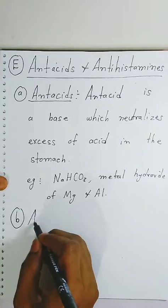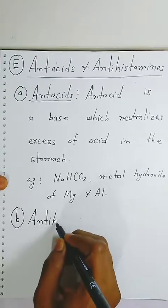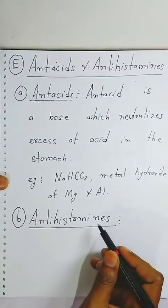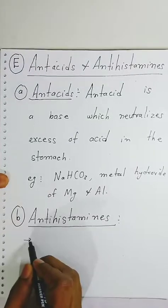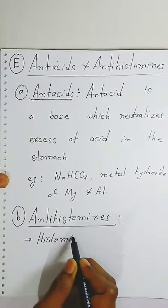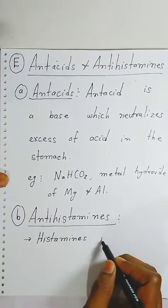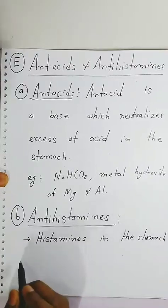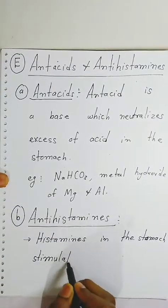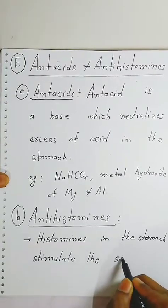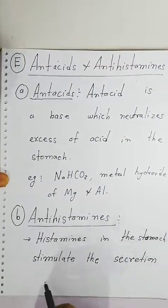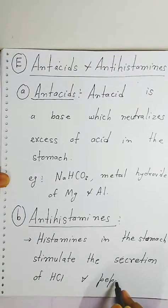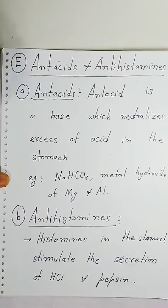Now we will see anti-histamines. Against histamines, the drugs we use are called anti-histamines. First, you should know what histamines are. Histamines in the stomach stimulate the secretion of HCl. Because of histamines, a lot of HCl will be generated in our stomach, as well as pepsin.